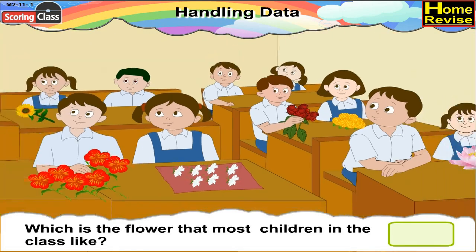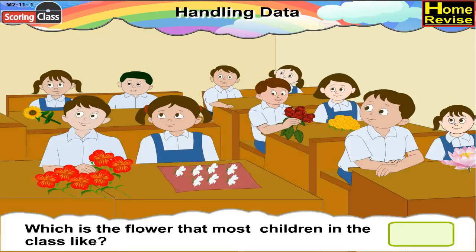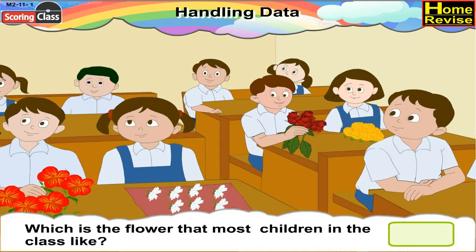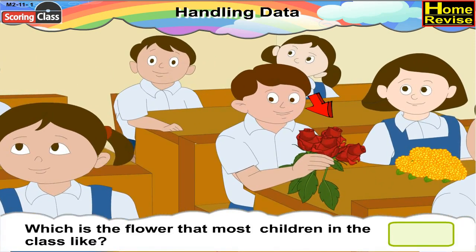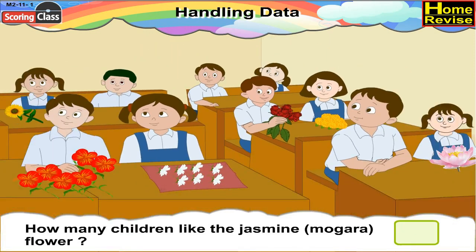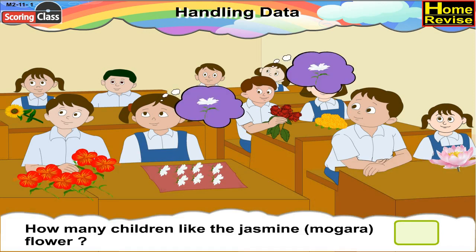Which is the flower that most children in the class like? Most of them have opted roses. So write rose in the box. How many children like the jasmine flower? Two of them like jasmine flower. So write two in the box.